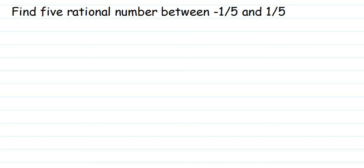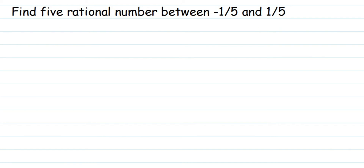Here's a question on rational numbers: find 5 rational numbers between -1/5 and 1/5. There are infinitely many rational numbers between any two rational numbers, and when we find them out, the first step is to check the denominator.